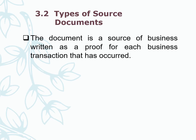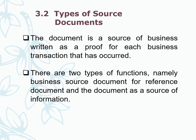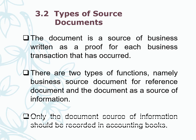A source document is a written business record as proof for each business transaction that has occurred. There are two types of functions. First is as a reference document, and the second one is as a source of information. Only the document that serves as a source of information should be recorded in accounting books.